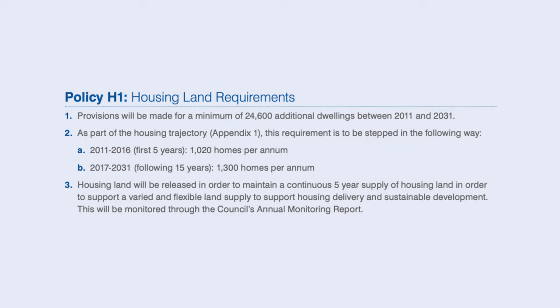Another policy I picked up on in the Coventry local plan is policy H1. This is very similar to policy DS1, but it doesn't harm to have more than one policy supporting your application. Policy H1 confirms that the council will deliver a minimum of 24,600 dwellings between 2011 and 2031. The fact that this is written into two types of policies within the local plan just means you've got one extra tick box in your corner.